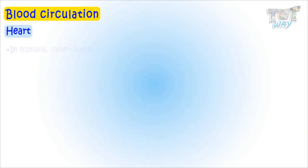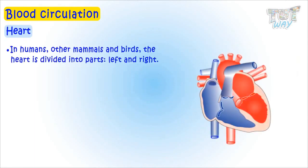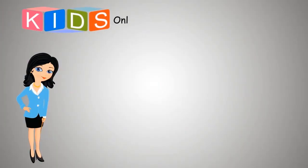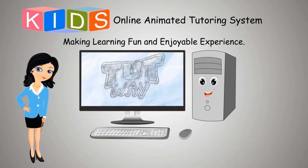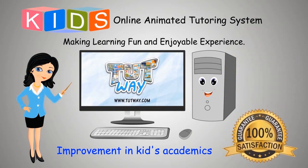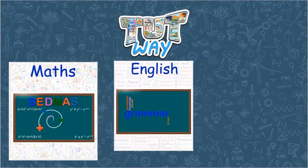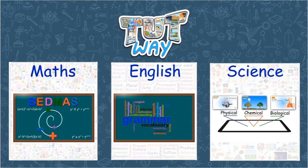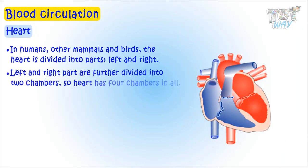In humans, other mammals and birds, the heart is divided into two parts: left and right. Each part is further divided into two chambers, so the heart has four chambers in all.